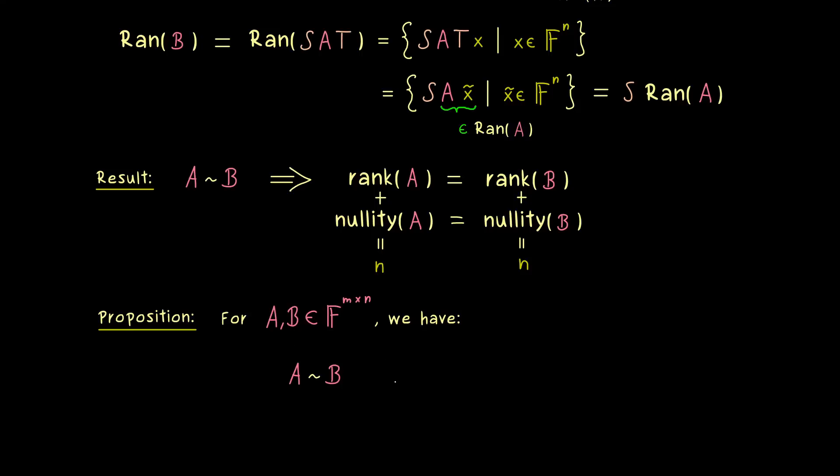So we have A is equivalent to B, if and only if the rank of A is equal to the rank of B. This means, the rank is the invariant we searched for and it tells us, that the rank gives us the equivalence classes in the space of matrices.